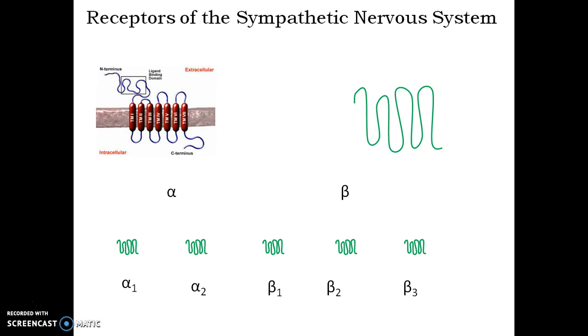The difference in the responses generated by interaction of norepinephrine with all these subclasses of receptors are because these receptors are located in different organs. Let us see those organs.